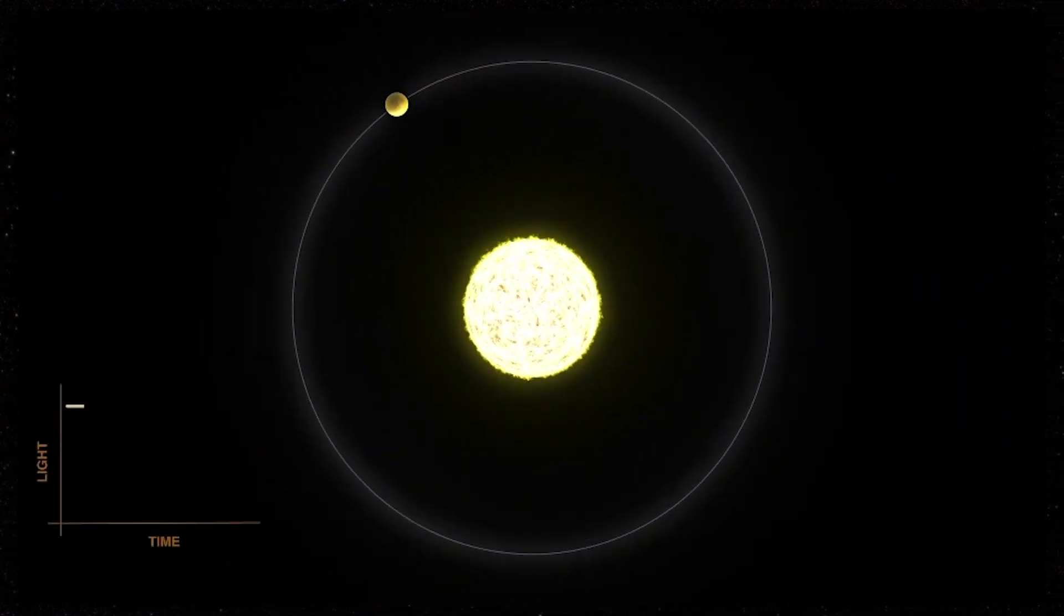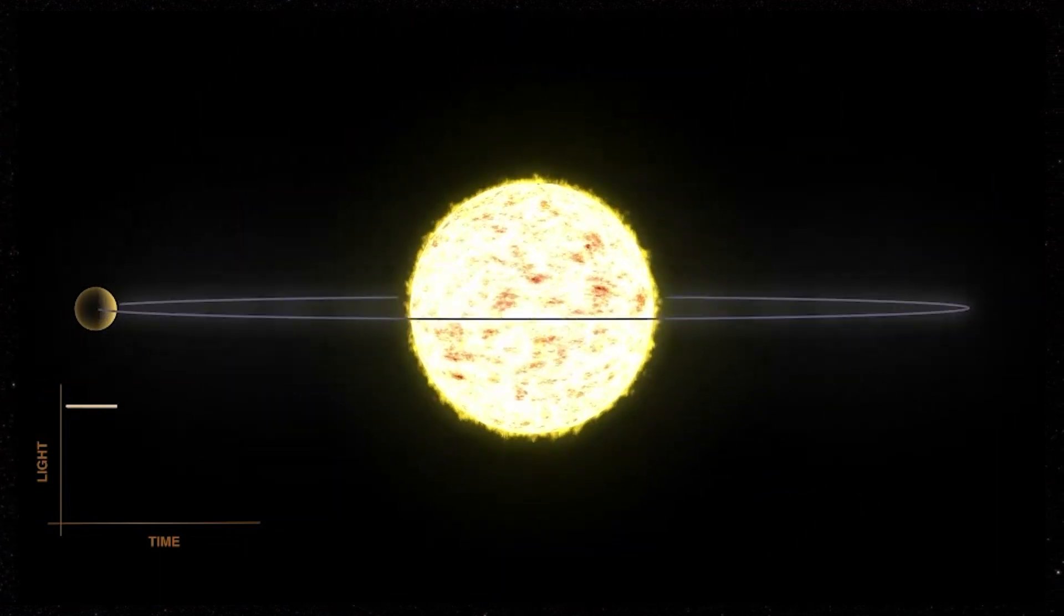Let's talk about Exoplanet Watch. Yeah, so Exoplanet Watch is a citizen science project to have folks using their own telescopes or robotic telescopes to help us observe exoplanets. So one of the methods we use to detect and study exoplanets is called the transit method.